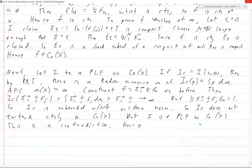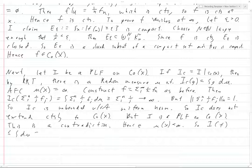So I(f) is less than or equal to integral of just 1 dμ, and then that's μ(X), which is finite. And this is for all f such that the uniform norm of f equals 1. Hence, I is bounded. And this is what we wanted to prove. And so we are done.